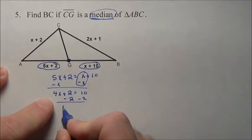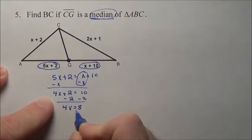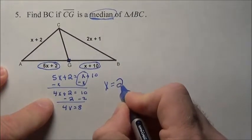I now subtract 2, I get 4x is equal to 8. Divide by 4, I get x is equal to 2.